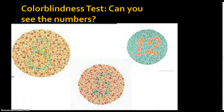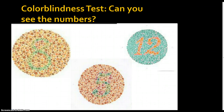Let's look at some colorblindness test images. You should be able to see numbers inside these circles. If you can't, there's a potential you could be colorblind. The first circle contains an 8 — it's a green 8. The next one should be a 5, which is a little hard to see. And the last one should be a 12 inside the circle.